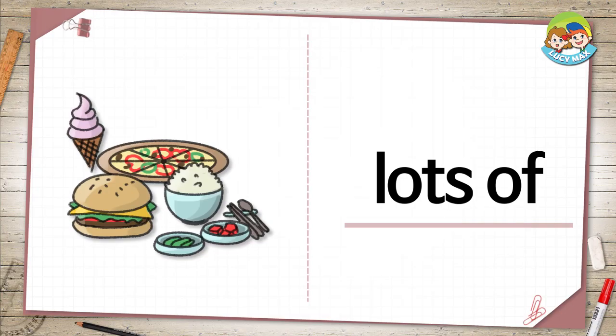The first one is lots of. This means many. There are lots of things to eat. Rice, pizza, ice cream, and what else? Do you have lots of toys?